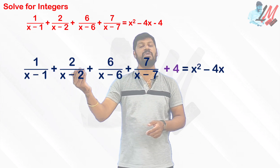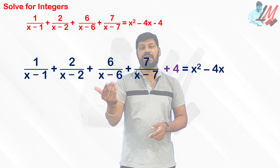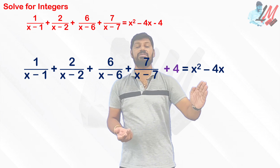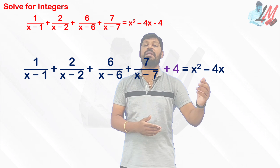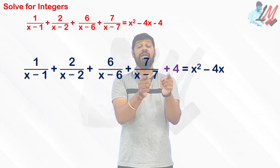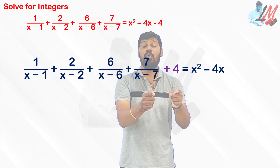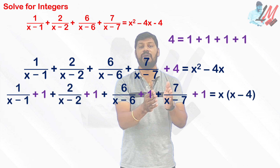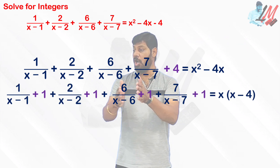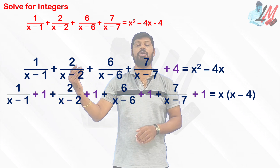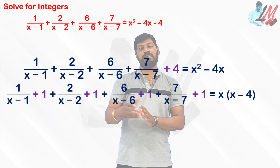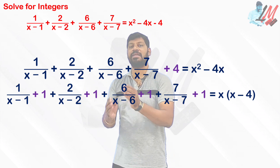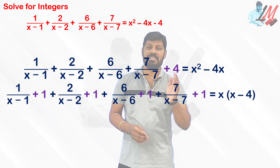So we have 1/(x−1) + 2/(x−2) + 6/(x−6) + 7/(x−7) + 4 = x² − 4x. Taking x common on the right gives x(x−4). The entire beauty lies in how we use this 4: I write 4 as 1+1+1+1 and distribute one to each of the four terms on the left.